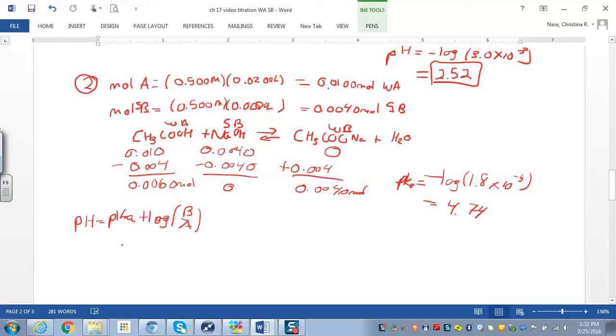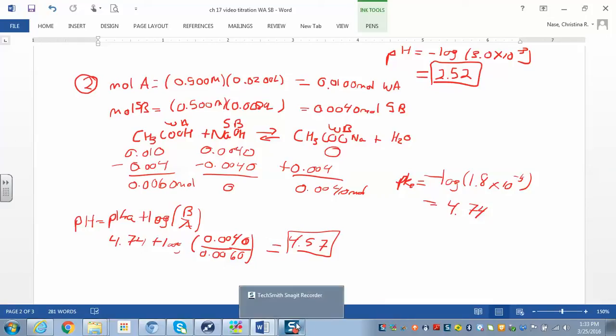Alright, so you can plug that into the Henderson-Hasselbalch equation. So I have 4.74 plus the log of the base, which is 0.004, over the acid, 0.006. And when you work that out, we get 4.57. So you can see the pH is definitely going up. Pretty slowly, but it's getting there.